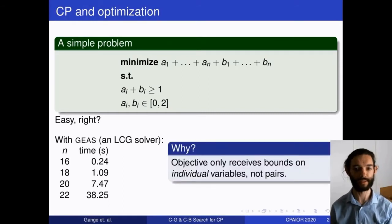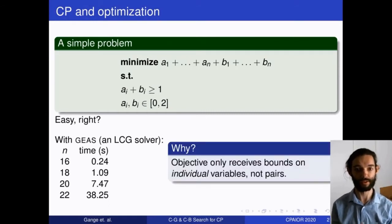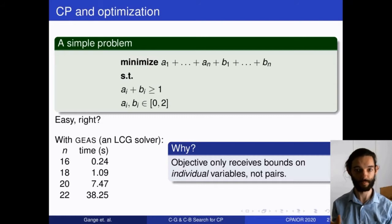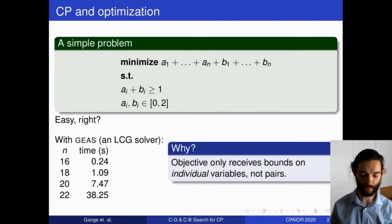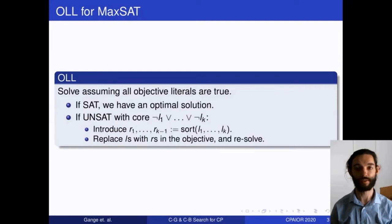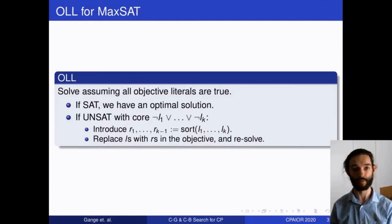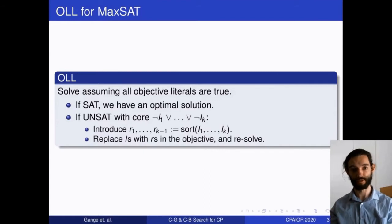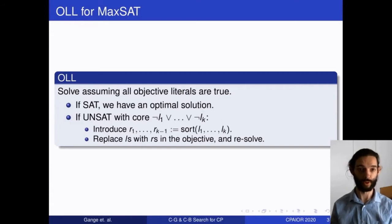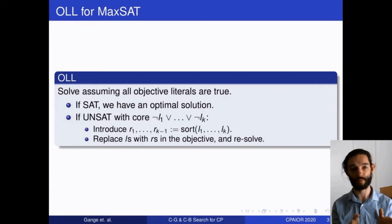The reason is that constraints on the a-b pairs can't communicate well with the objective term — they can't communicate bounds on subsets of variables. This is a problem max-SAT solvers face, resolved using UNSAT core methods. We build on the OLL algorithm for max-SAT: optimistically set all objective terms to their optimum value and try to solve. If we succeed, great. Otherwise, we get back an unsatisfiable core of objective terms that can't collectively take their best value.